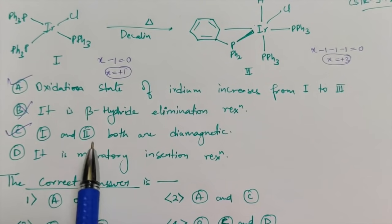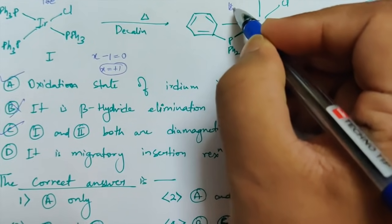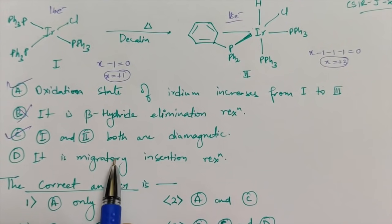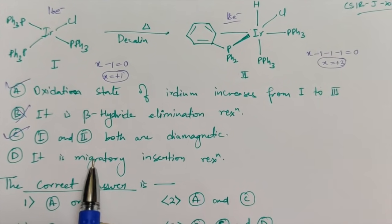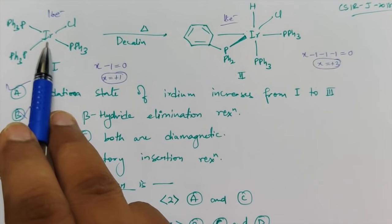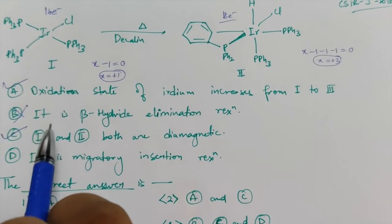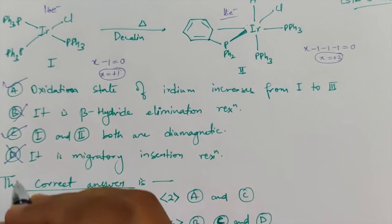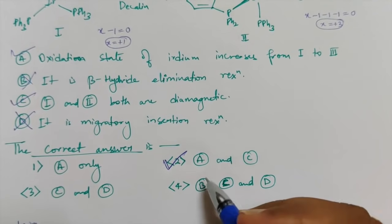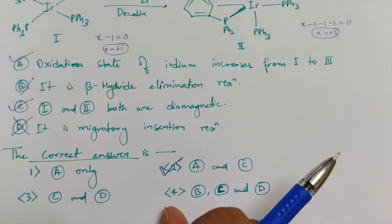Statement D says it is a migratory insertion. When you apply the 18-electron rule: the starting complex is a 16-electron species whereas the product is 18-electron. When I explained migratory insertion, I said it generally takes place in 18-electron coordinatively saturated complexes. This complex is neither 18-electron nor coordinatively saturated, so the possibility of migratory insertion is very low. Statement D is wrong. The correct statements are A and C — meaning option number two is the correct answer.